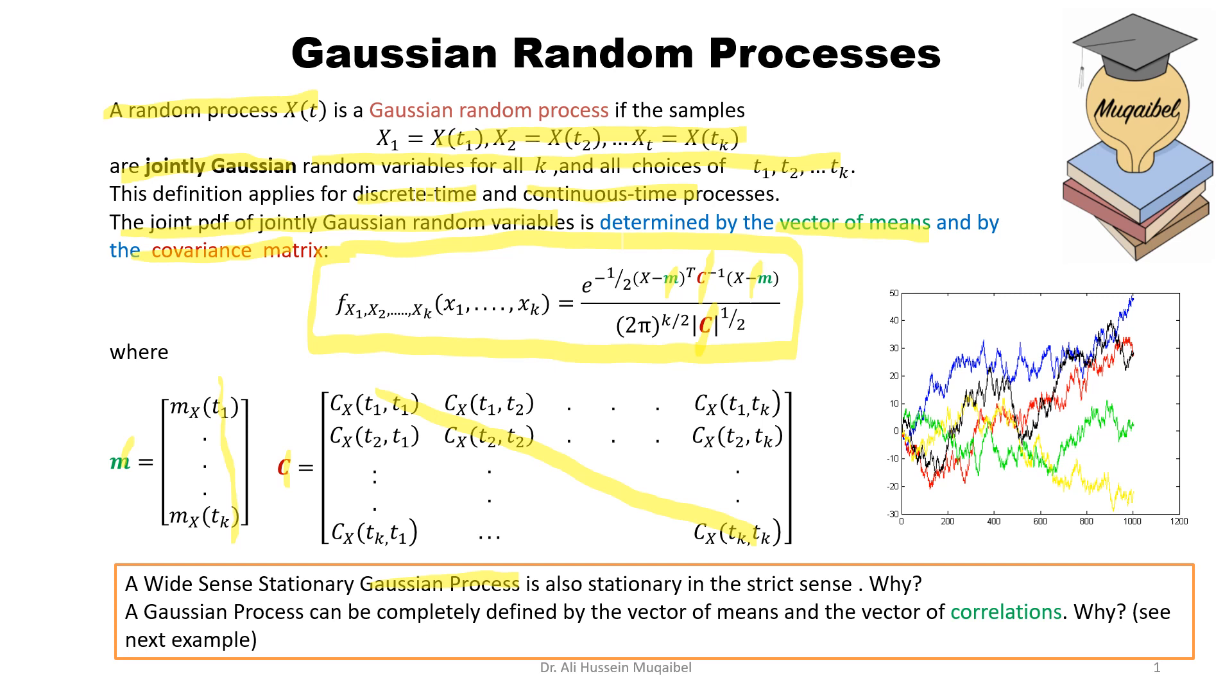The second note I'd like you to keep in mind is that the Gaussian process can be completely defined by the vector of the correlations and the means, of course. So knowing the means and the variances gives you the full PDF.